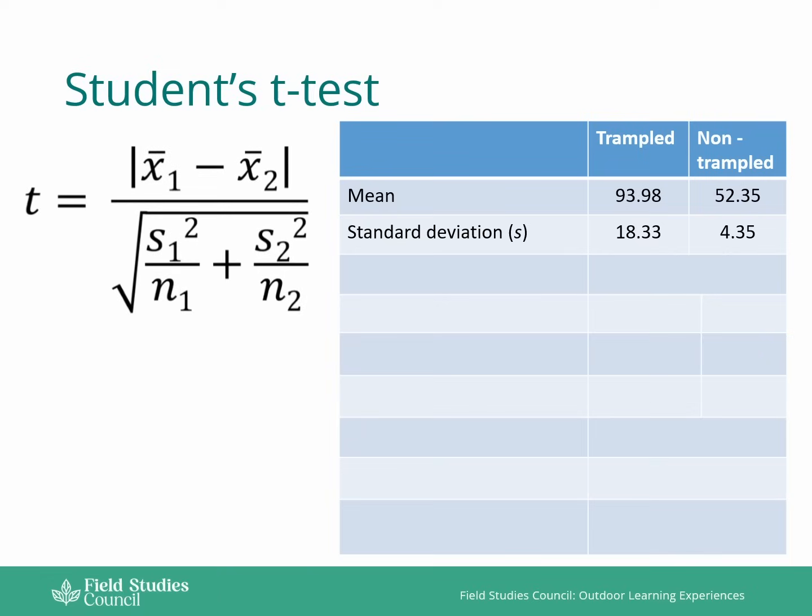Looking at the t-test equation then, we've got our mean for our trampled and our non-trampled site. If we call trampled site one and non-trampled site two, we know that we have the mean of site one, denoted here as x̄₁, and the mean of site two. So the mean of site one is 93.98 and the mean of site two is 52.35. We also know the standard deviation.